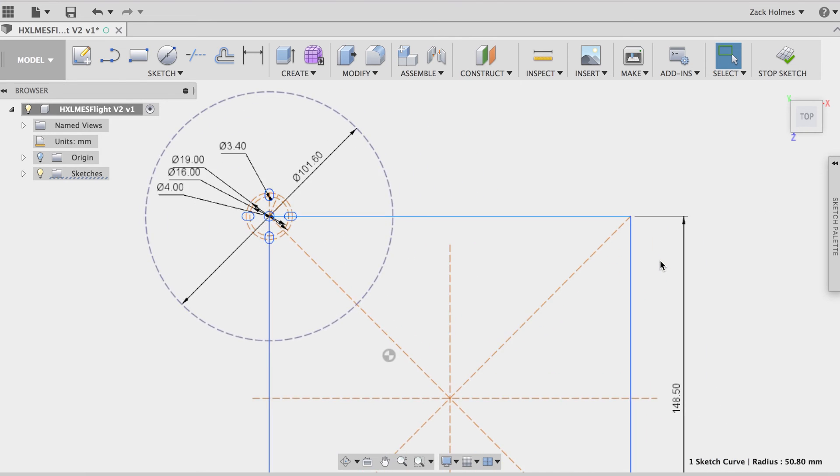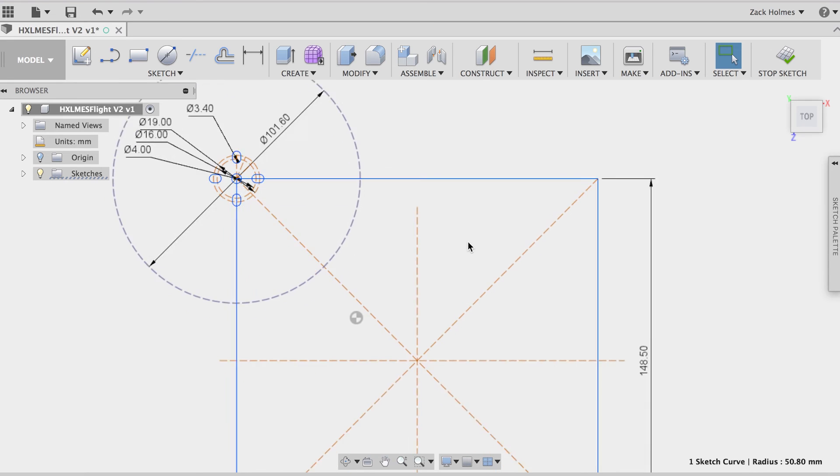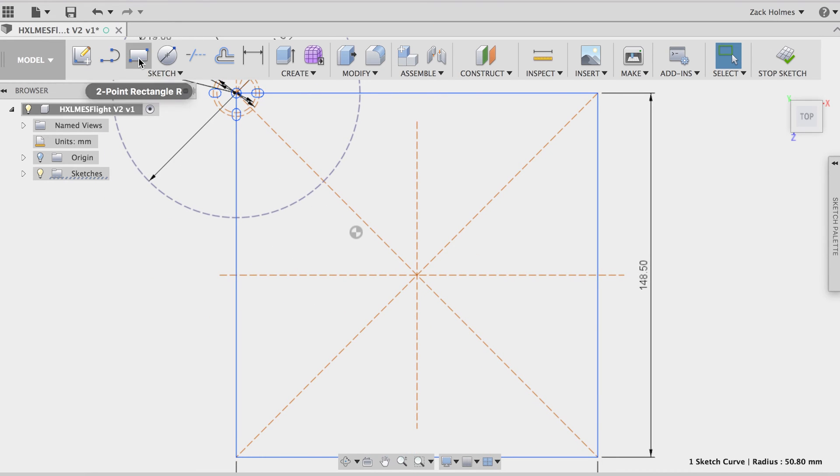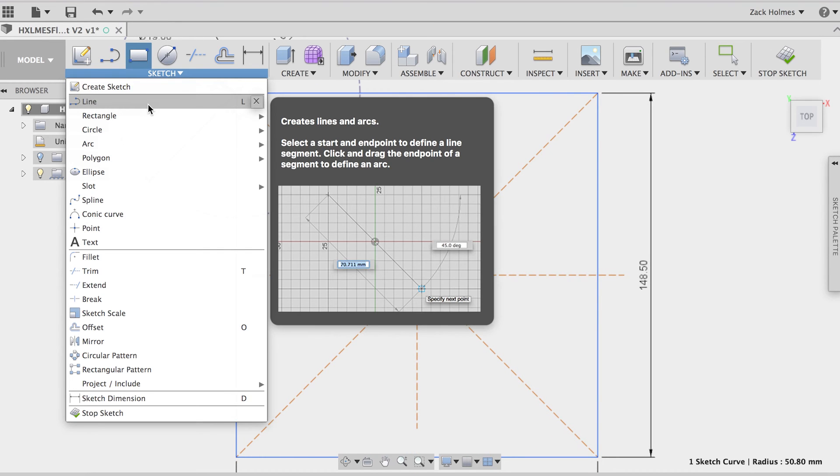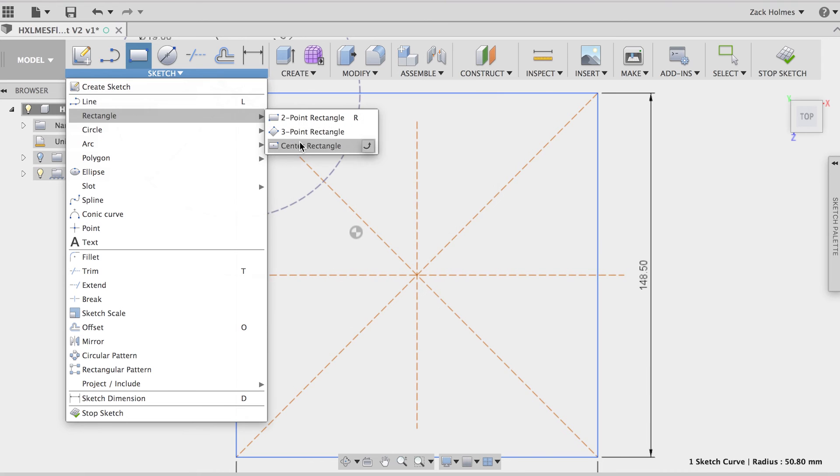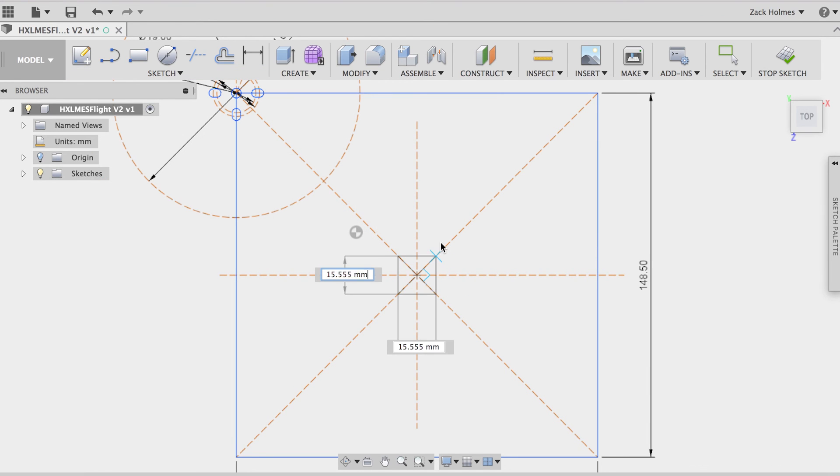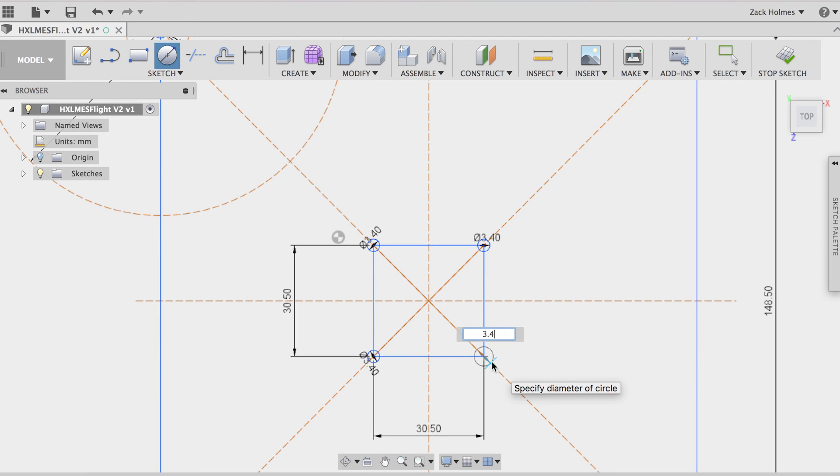Now all I need to do is use the mirror tool to mirror the entire assembly from that one corner down to the bottom and then across to the other side, and we've got all four of our motor mounting points done. I'll just quickly put a reference in the center of the frame to the flight controller mount, so it's just going to be the standard mounting pattern of 30.5 millimeters, and we'll make some adjustments to that later on.